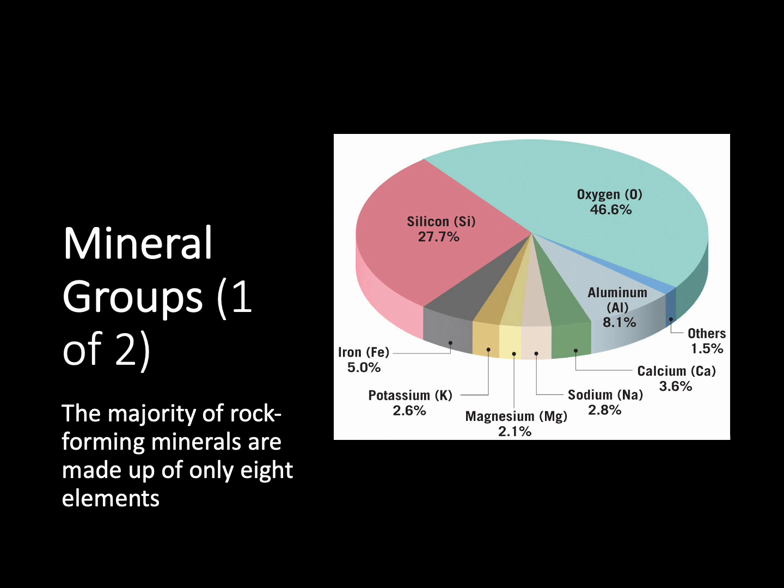When we look at our rock-forming minerals — the ones most common in our crust — we see that regardless of where we are on our planet, they're made up of only about eight elements. Oxygen is the most abundant, making up about half of our crust. The second most abundant is silicon, which makes up about a quarter. We also have smaller amounts of aluminum, iron, magnesium, sodium, and calcium. About 75% of our crust is made out of just two elements: oxygen and silicon.